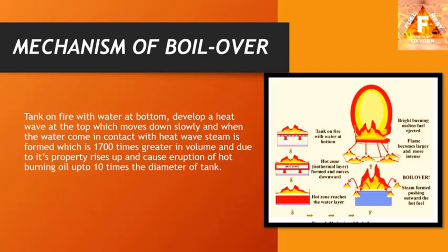Here you have a schematic diagram of the different stages of a boil over phenomenon. First, the tank is on fire and there is water below the fuel area. Then the hot zone or heat layer is formed and moves downwards towards the water. The hot zone reaches the water layer and then the boil over occurs — steam formed pushing outward the hot fuel — and later this results in bright burning molten fuel as the heat layer is ejected and the flame becomes larger and more intense.